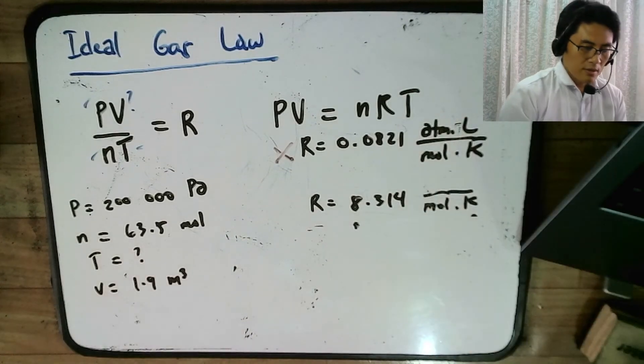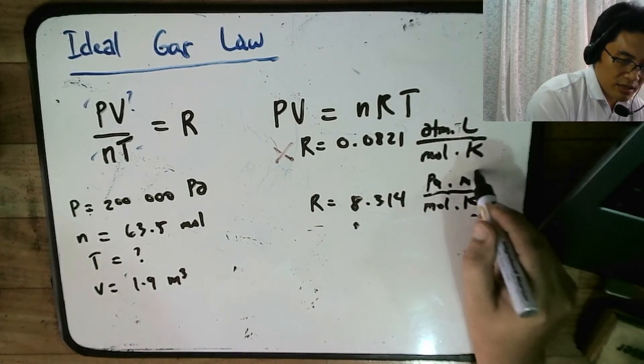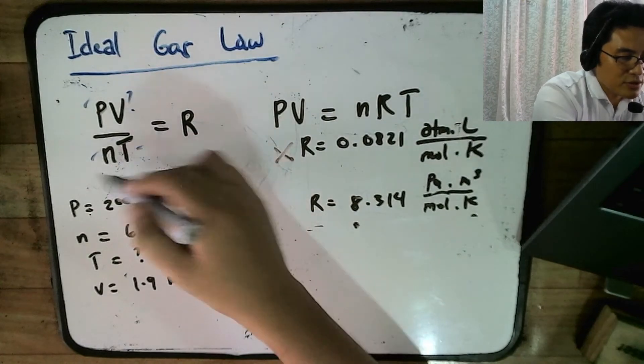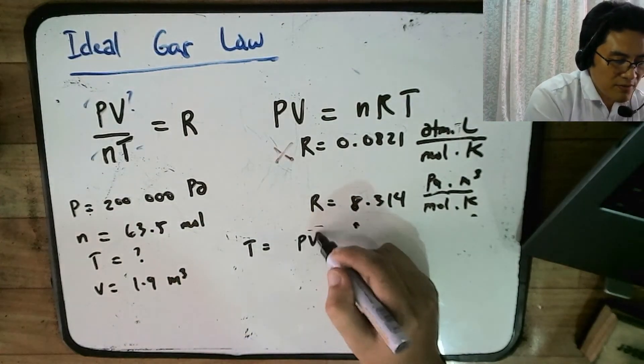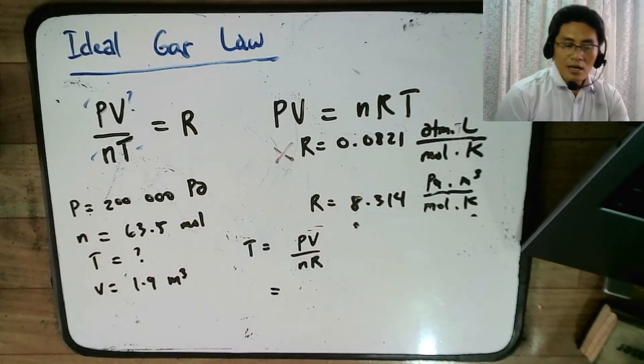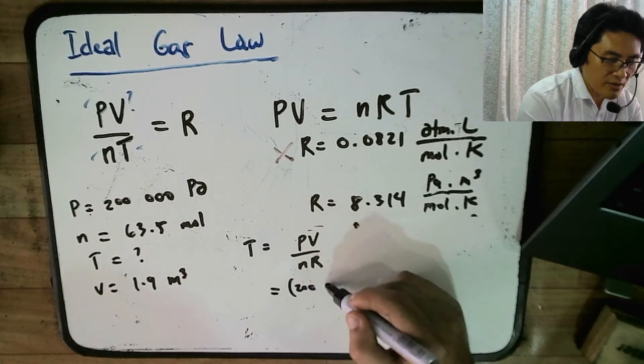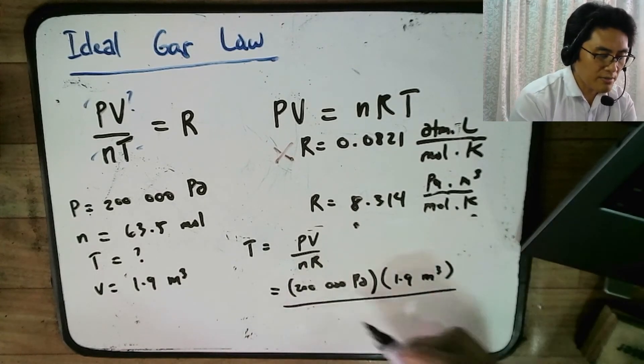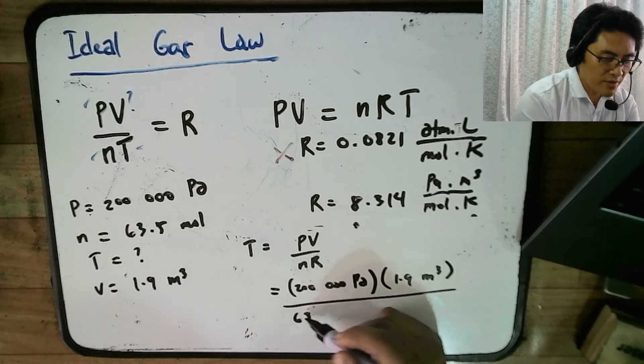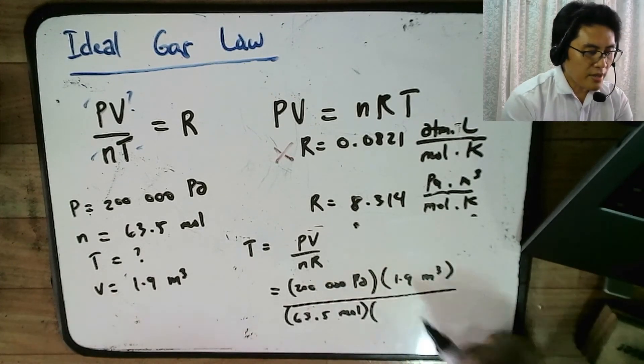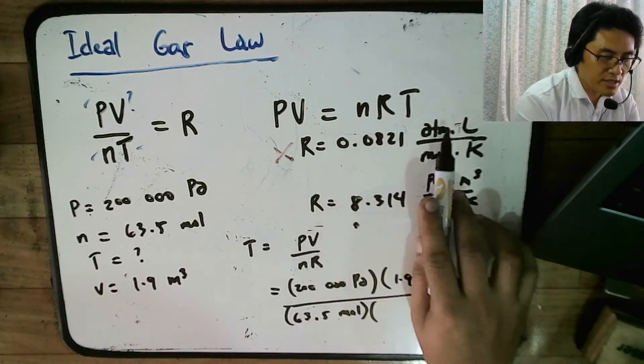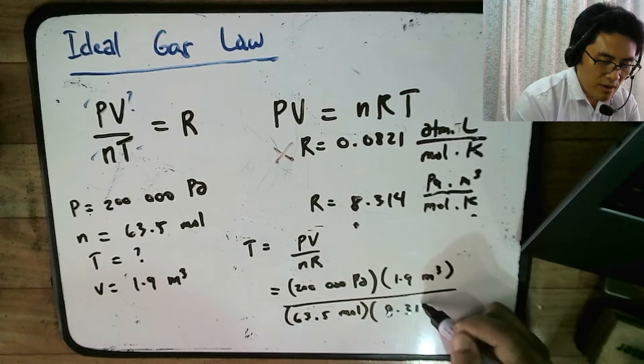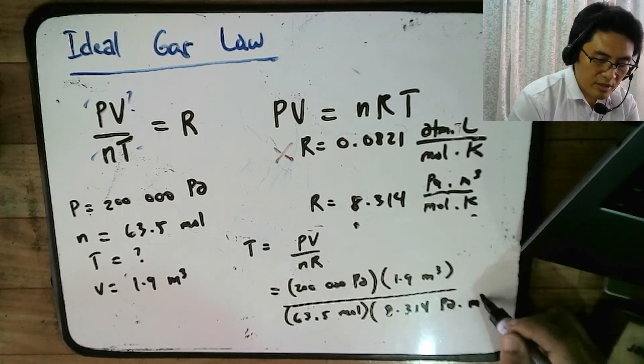And I like this format because it easily cancels out with our units here. So let me erase this. And again, let me change that Joule into Pascal times meter cube. And then let's get solving. So to solve for the temperature here, I just have to manipulate this. And I hope that you can already get this, that this is PV over N times R. So P pressure is now 200,000 Pascals. And then V is 1.9 meter cube divided by the N is 63.5 moles.